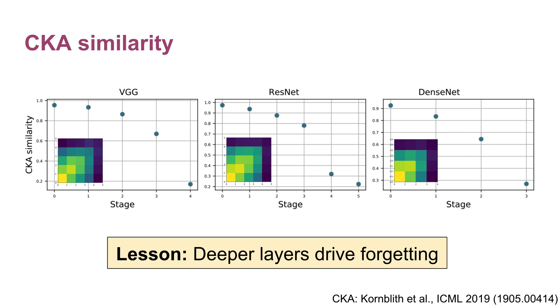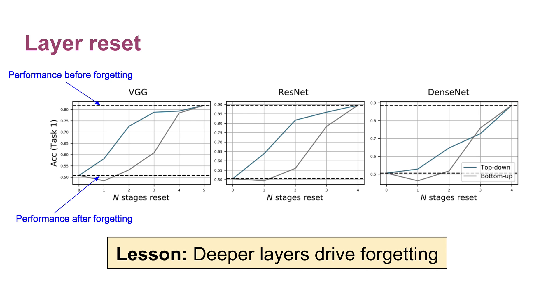As we can see for all three of the networks that we studied, representations closer to the input side of the network don't actually change all that much due to training on task two. Instead, it seems that most of the forgetting is actually driven by stages closer to the output. This pattern is consistent across network sizes, splits of the dataset, and seeds. The lesson here really seems to be that deeper layers are driving forgetting in these networks.